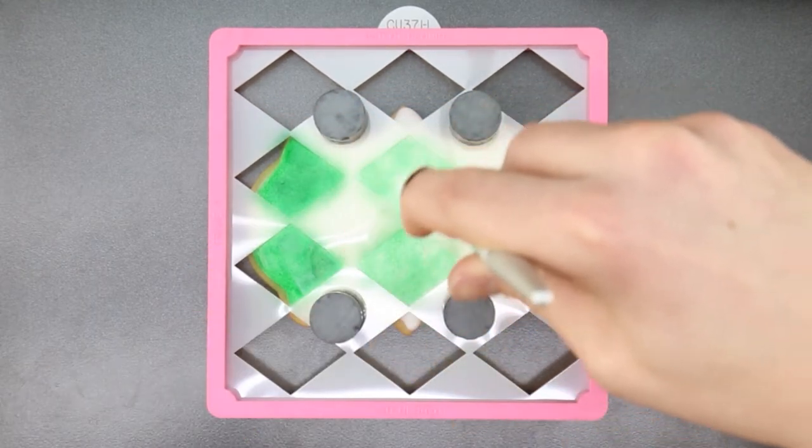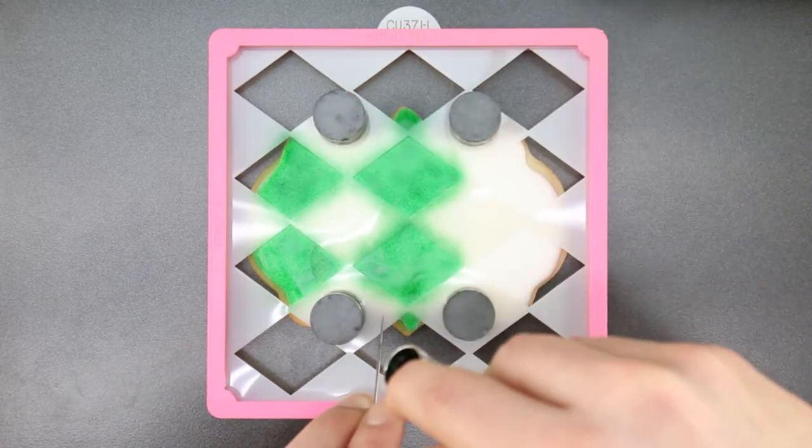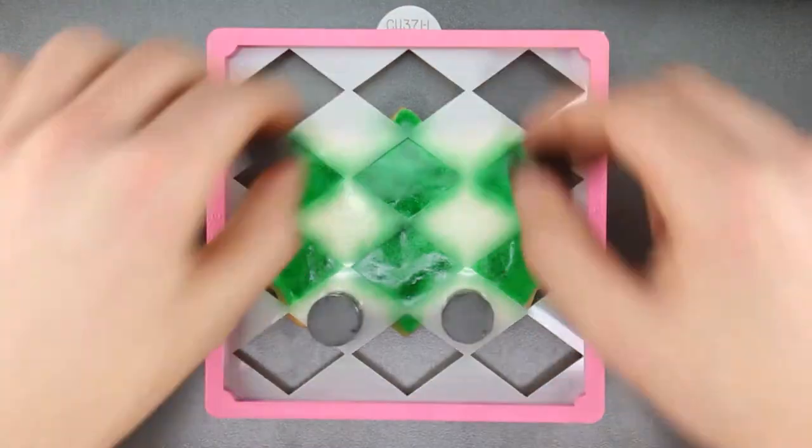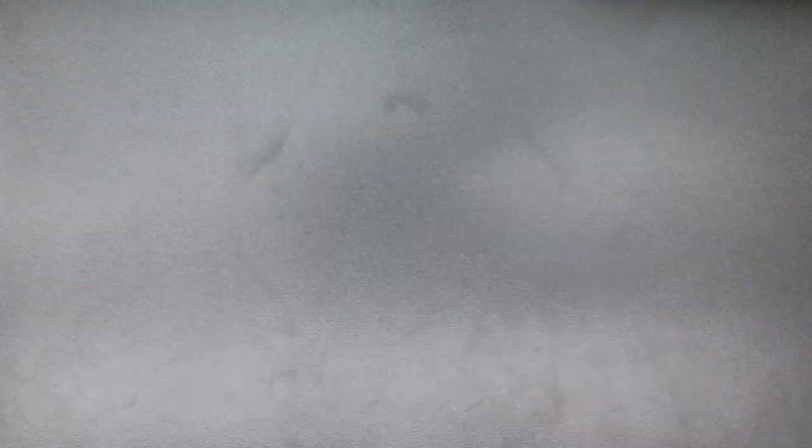Gradually build the color with a back and forth motion. After a second coat of food coloring, remove the cookie magnets and place the stencil on the next cookie.